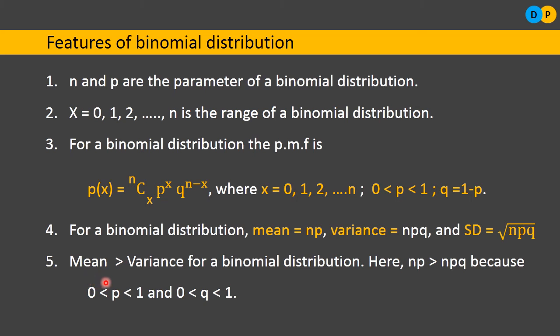Feature 5: for a binomial distribution, the mean is always greater than the variance. Mean = np and variance = npq. Since both p and q lie in the range 0 to 1, np will always be greater than npq. So if the mean value is greater than the variance, we can identify it as a binomial distribution.